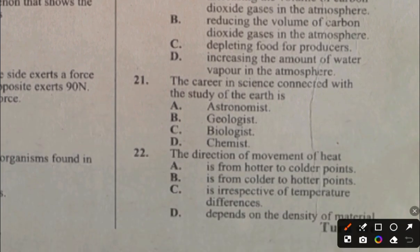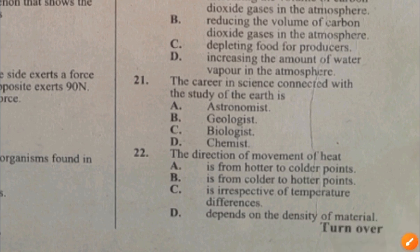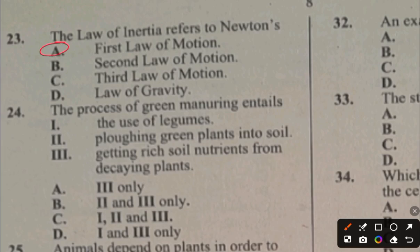Question 21. The career in science connected with the study of the earth is B, geologist. Question 22. The direction of movement of heat is: A. From hotter to colder object, B. From colder to hotter object, C. Irrespective of temperature differences, D. Depends on the density of the material. The answer to question 22 is A, from hotter to colder object. Question 23 answer is A.